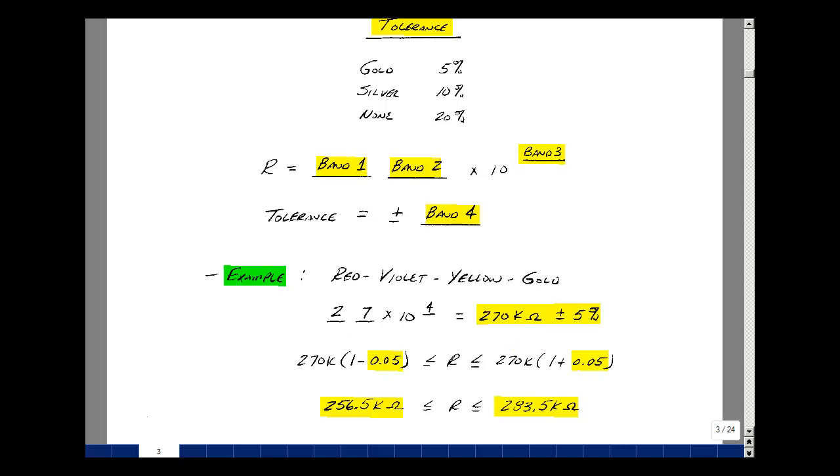And what that means is that the actual value of resistance would fall somewhere within a five percent band. In other words, if you multiply this by one minus 0.05 and multiply this by one plus 0.05, you get 256.5k and 283.5k. So our actual resistor value falls somewhere between these two values. That's a pretty big range. So what we'll take a look at next is using a digital multimeter to measure resistance.